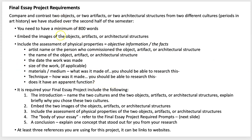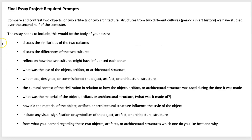So to summarize: 800 words minimum, at least two images of the artifacts you're comparing, the physical properties of both artifacts, and then your essay. The introduction should name the two cultures, name the two objects or artifacts or architectural structures, and explain why you chose them. You'll embed the two images and include the physical properties there as well.